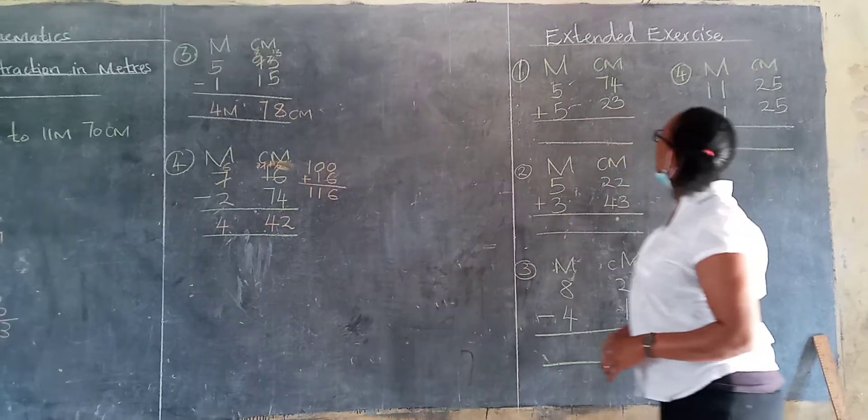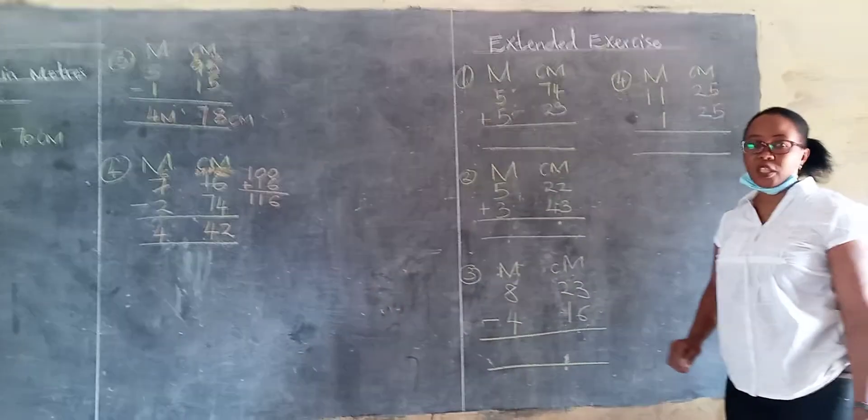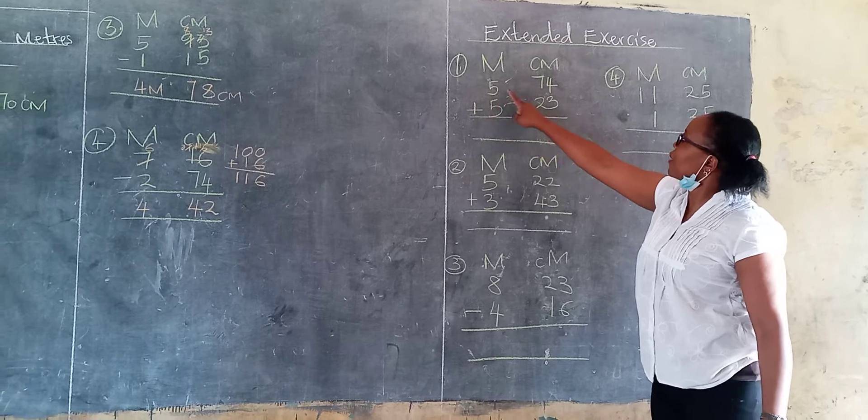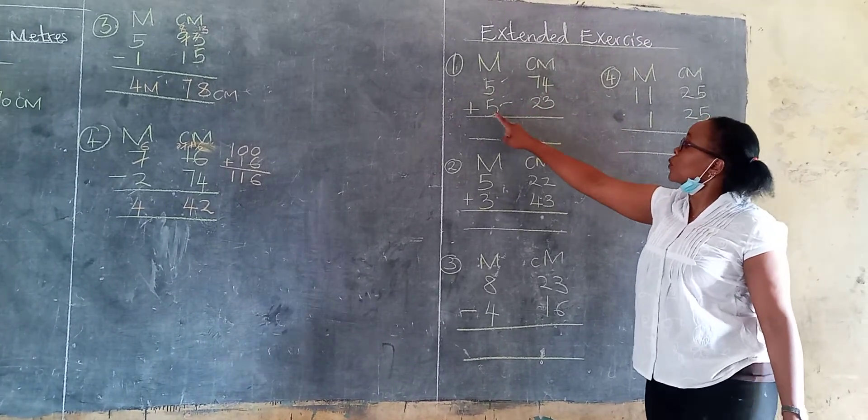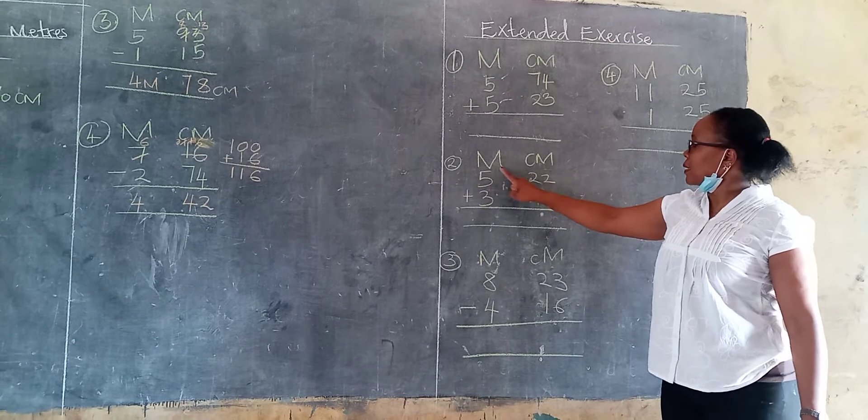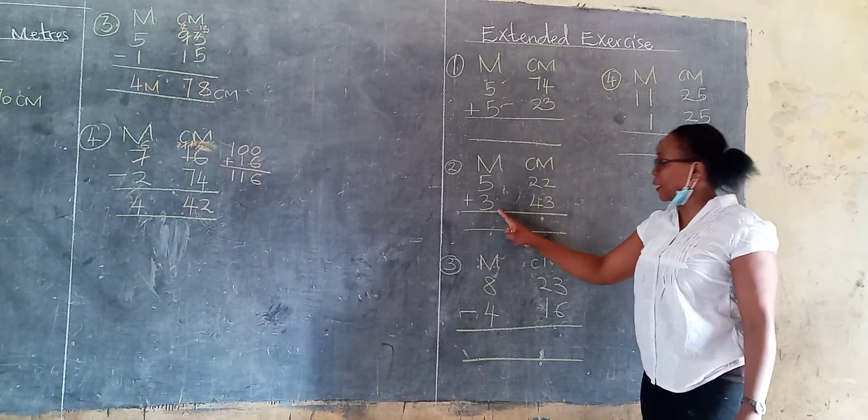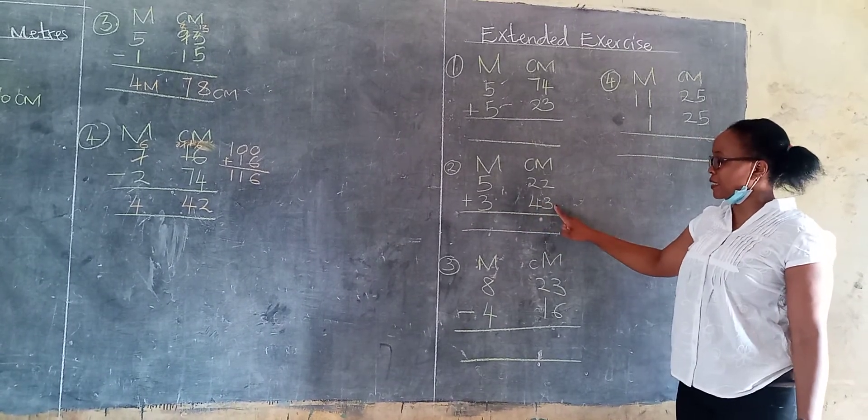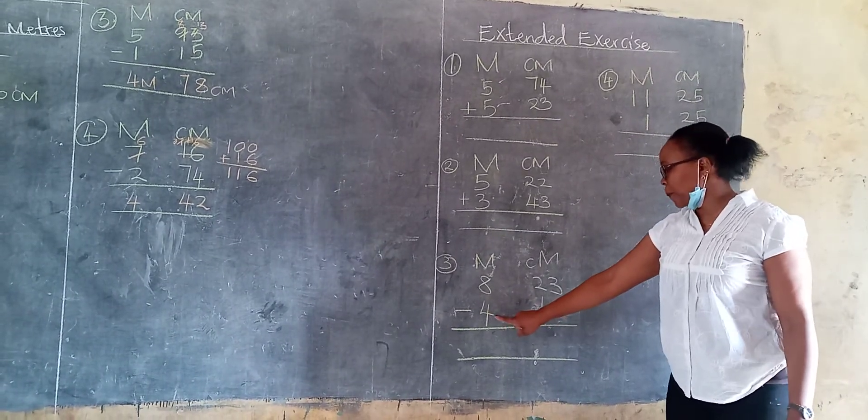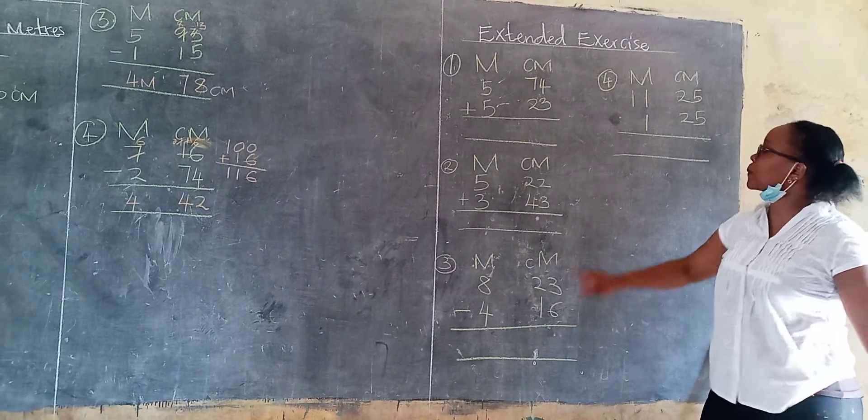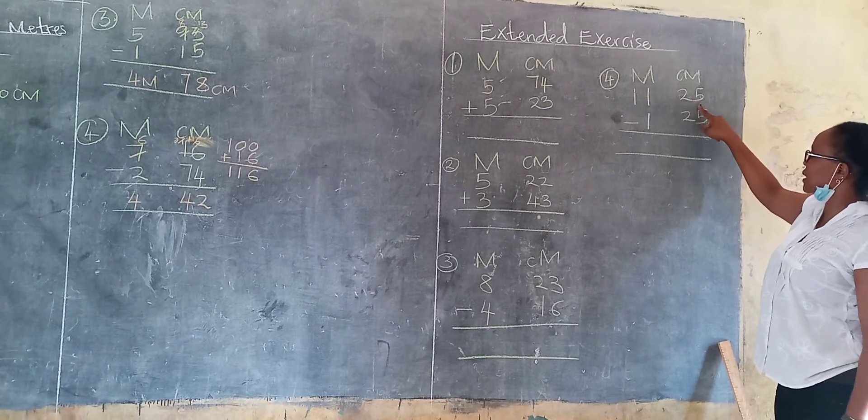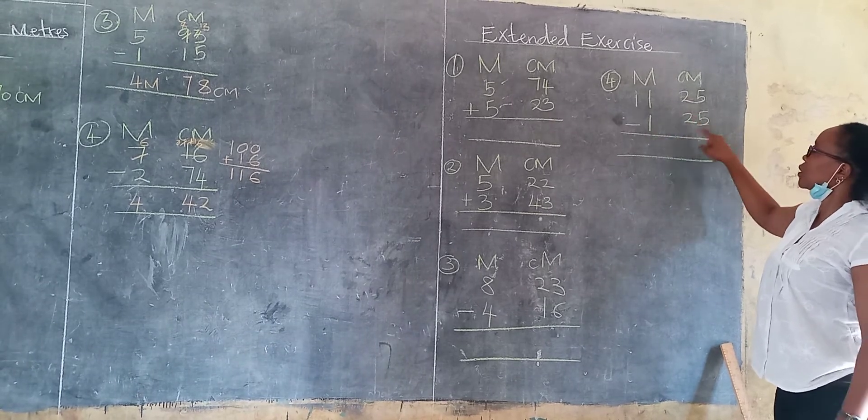So I have an extended marker for you. It's just four questions. I hope you are noting them down in your book. So number 1, you add 5 meters 74 centimeters. You add 5 meters 23 centimeters, add 3 meters 33 centimeters. Then we have number 3, 8 meters 23 centimeters. You take away 4 meters 16 centimeters. I hope you noted. And the last one, you take away also. We have 11 meters 25 centimeters. You take away 1 meter 25 centimeters.